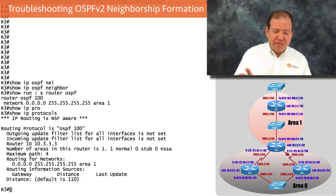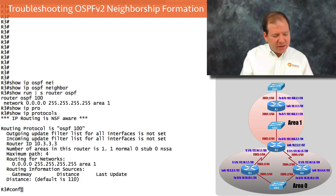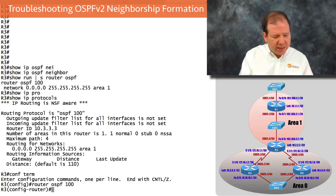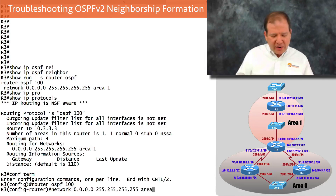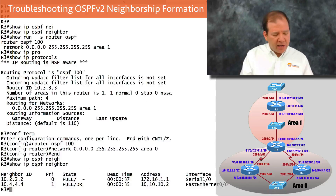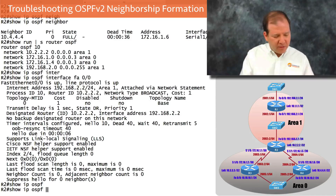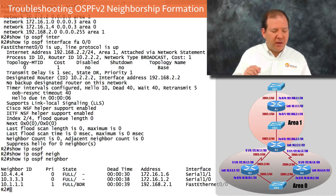Router R3 should have all its interfaces participating in Area 0, but it's currently set to Area 1. Going into router OSPF process 100, we issue 'network 0.0.0.0 255.255.255.255 area 0' instead of area 1. After a few seconds, 'show ip ospf neighbor' confirms R3 is now neighbors with R2 and R4. Confirming on R2 with 'show ip ospf neighbor' shows R2 is now a neighbor with all the other routers.